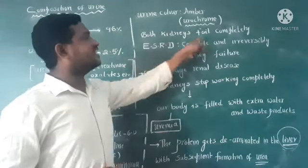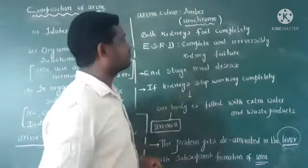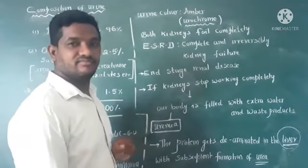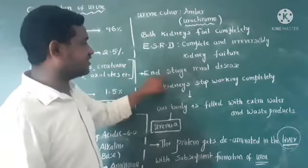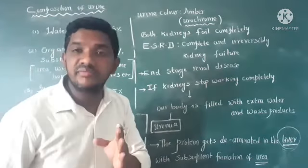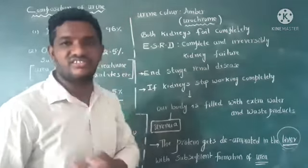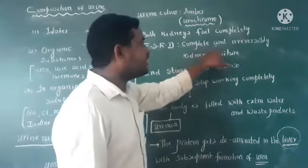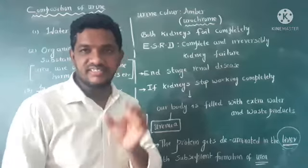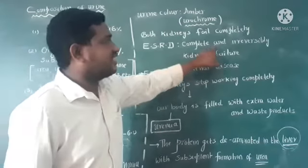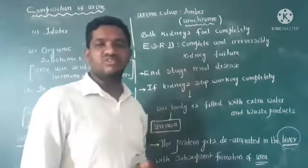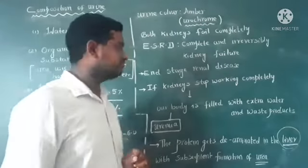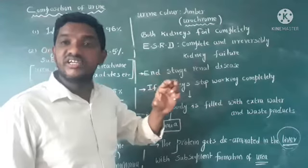When both kidneys fail completely, that condition is called ESRD. ESRD means End Stage Renal Disease — complete and irreversible kidney failure. If kidneys stop working completely, it is called End Stage Renal Disease.